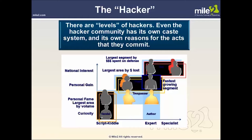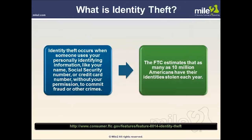So what is identity theft? Identity theft occurs when someone uses your personally identifiable information — like your name, social security number, or credit card number — without your permission to commit fraud or other crimes. The FTC estimates that as many as 10 million Americans have their identities stolen each year. You can visit consumerftc.gov to check that out. It's becoming more and more common each year, and it's very easily done, so you have to be very cautious.